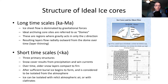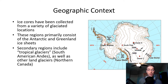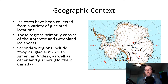In geographic context, ice cores have been collected from a variety of glaciated locations — primarily the Antarctic and Greenland ice sheets. Secondary regions include tropical glaciers like the Andes in South America and land glaciers like Northern Canada. One of the most famous is the Vostok dome or Vostok core, circled here. In past videos we've looked at the EPICA Dome C, right nearby the Vostok dome, which we'll talk about in the next few slides.